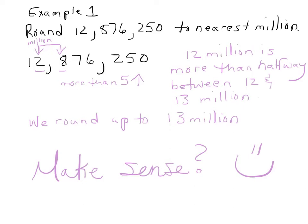Example one: round twelve million eight hundred seventy-six thousand two hundred fifty to the nearest million. So here we have twelve million. You know the rule — if the number to the right is five or more, it's rounded up to the next higher number. Twelve million eight hundred seventy-six thousand two hundred fifty is more than halfway between twelve and thirteen million, so we round up to thirteen million.